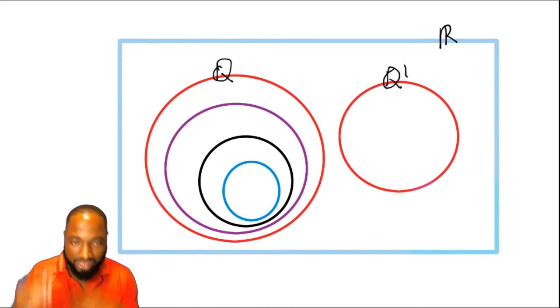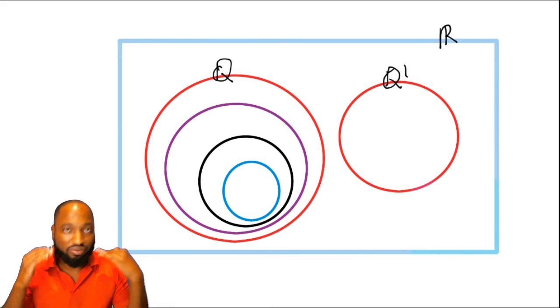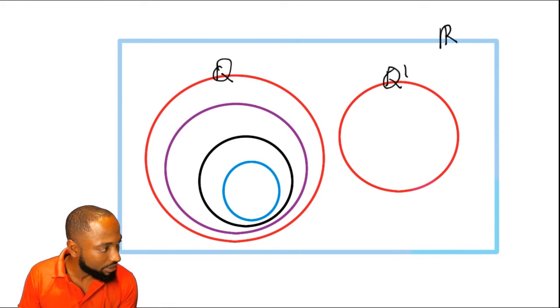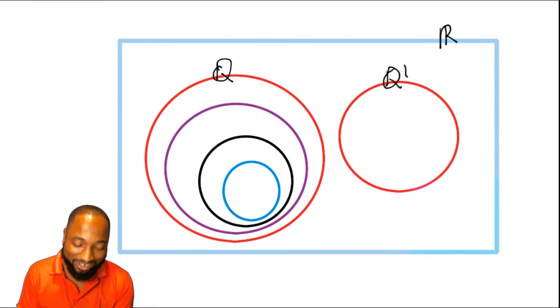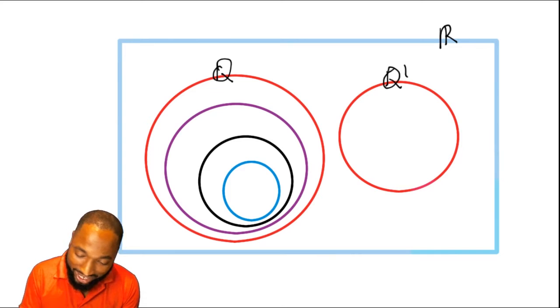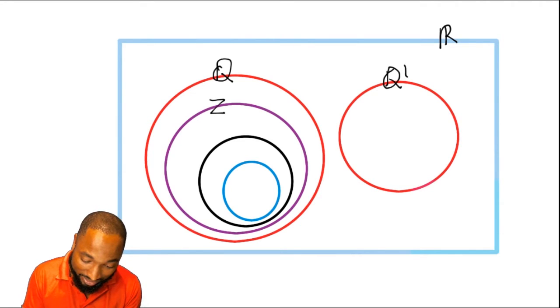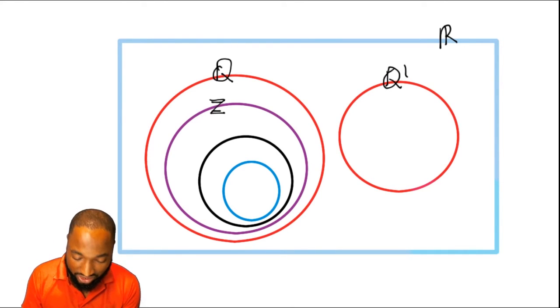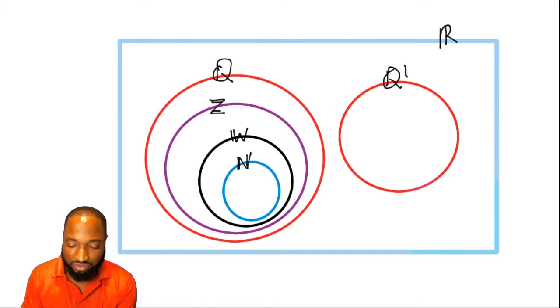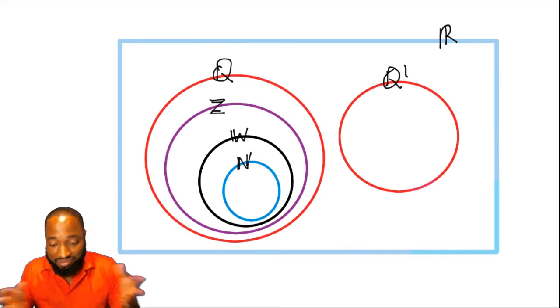This one here has to be just under the rational numbers. This one will be integers. This one is going to be our whole numbers—that's a W that I'm putting here. And this one is going to be our natural numbers. So this is basically it.